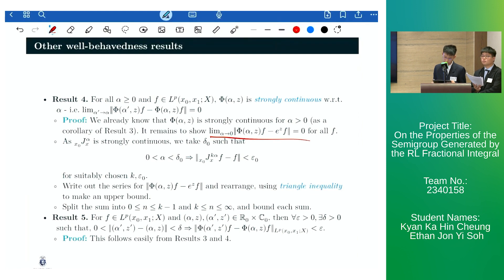And we can show this by using the fact that j alpha is known to be strongly continuous, meaning that the following inequality holds. And then we can use the series definition once again to expand this expression and rearrange it. Then, by using the triangle inequality, we can then make an upper bound for this expression.